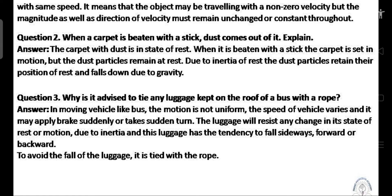Q3: Why is it advised to tie any luggage kept on the roof of a bus with a rope? Answer: In a moving vehicle like a bus, the motion is not uniform. The speed of the vehicle varies and it may apply brakes suddenly or take a sudden turn. The luggage will resist any changes in its state of rest or motion due to inertia, and the luggage has the tendency to fall sideways, forward, or backward. To avoid the fall of the luggage, it is tied with a rope.